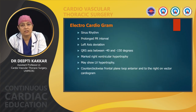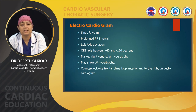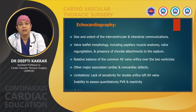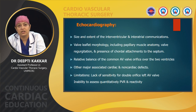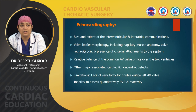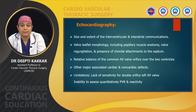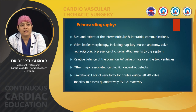The ECG shows sinus rhythm with prolonged PR interval, left axis deviation with axis between minus 40 to minus 150 degrees, and signs of RVH — occasionally also LVH. On echocardiography the main interest is to define the size and extent of interventricular and interatrial communication, valve leaflet morphology including papillary muscle anatomy, AV valve regurgitations, caudal attachments, presence of parachute mitral valve component, accessory tissues, relative balance of the common AV valve orifice over the two ventricles, and any associated cardiac and non-cardiac defects. Limitations of echocardiography include lack of sensitivity for a double-orifice left AV valve and inability to quantitatively assess pulmonary vascular resistance and reactivity.